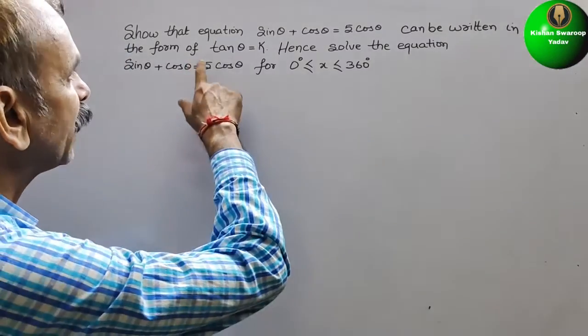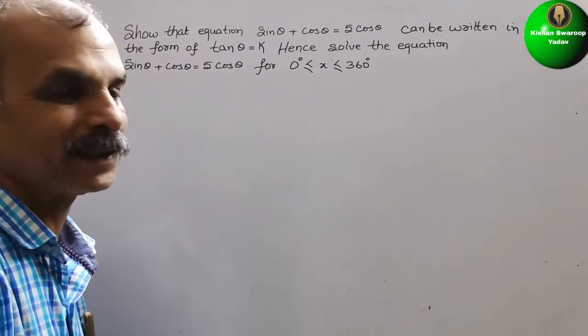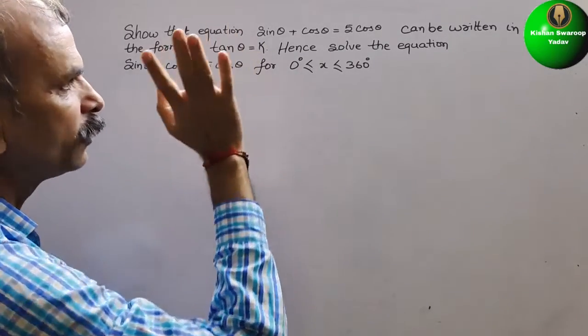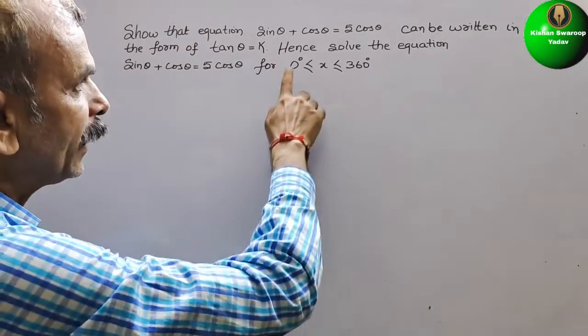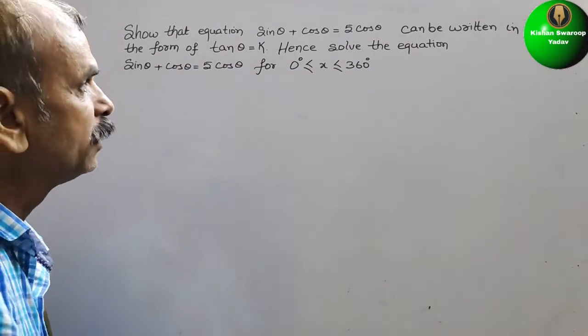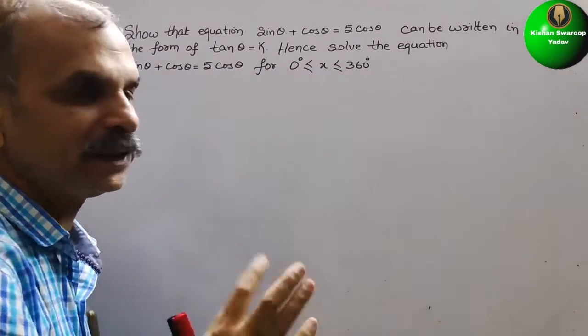Your question is, solve that equation sin theta plus cos theta equals 5 cos theta, can be written in the form of tan theta equals K. Hence, solve the equation sin theta plus cos theta equals 5 cos theta for 0 degree less than equal to x less than equal to 360 degree.